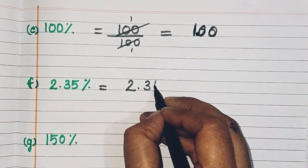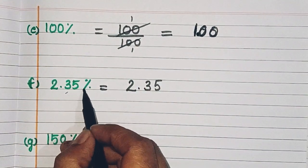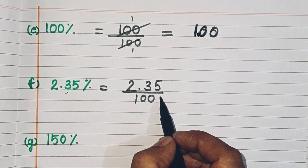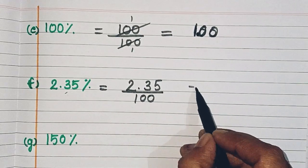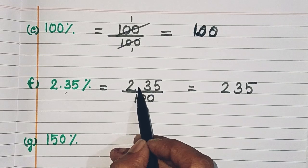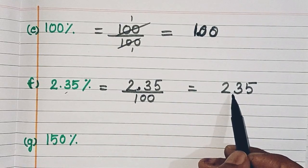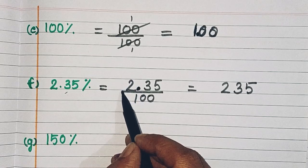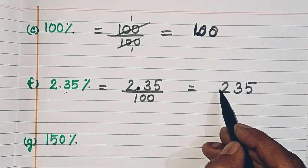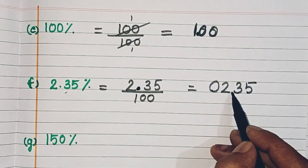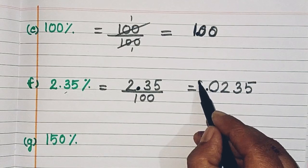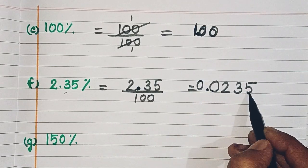Then we have 2.35%. This is already a decimal percent. So 2.35 upon 100. Here 2.35 already has a decimal point. The decimal position moves 2 places — 1 and 2 — so we add a 0 before, and the point shifts giving 0.0235 as your decimal number.